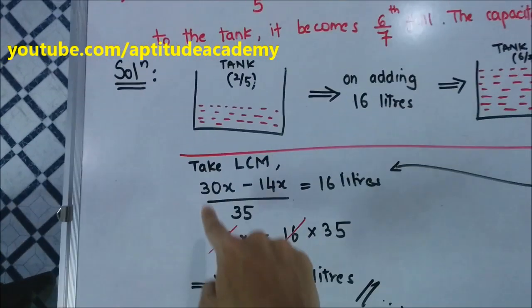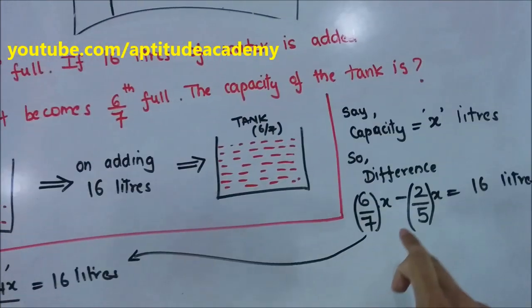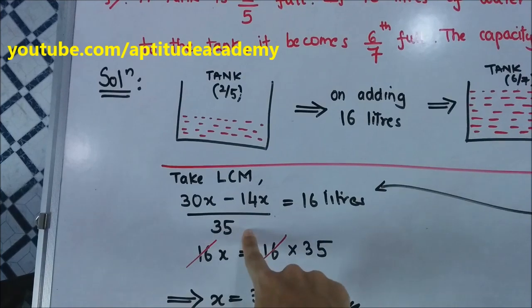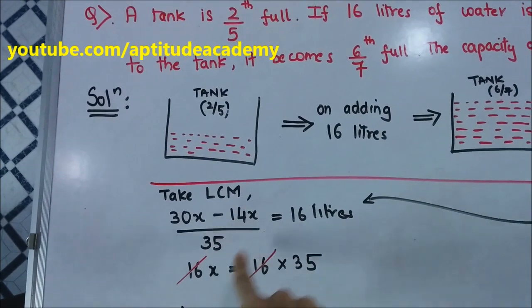Now if you take an LCM, the LCM of 7 and 5 will be 35. So you get 30x minus 14x upon 35. Now 30 minus 14x will be 16x.